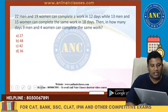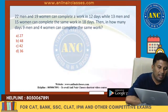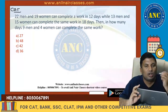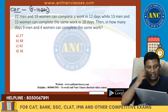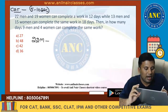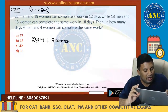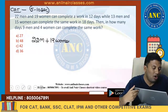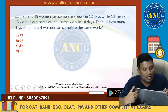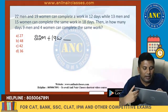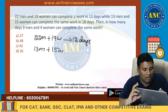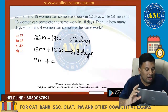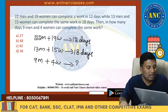Next question — listen carefully, this is a CAT replica question. Most students solve it in 2 minutes, but I will try to solve it in 5 to 10 seconds if you understand the catch. 22 men and 19 women can complete a work in 12 days. 13 men and 15 women can complete a work in 18 days. 9 men and 4 women — can complete the work in how many days?